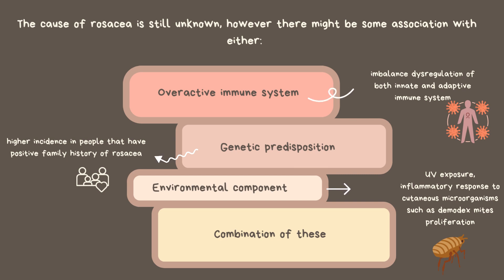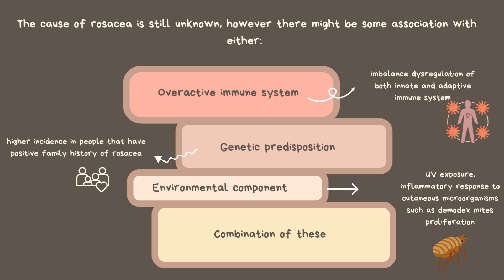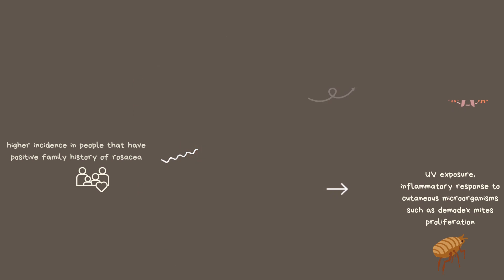Demodex mites are spindle-shaped transparent mites located in the sebaceous glands, which are part of the normal human microbiota. People with rosacea usually have a higher number of these mites, and when these mites die, they release bacteria, which triggers the immune response, causing inflammation and erythema, or redness, in the skin. Combinations of these are considered the potential factors involved in the initiation and development of rosacea.